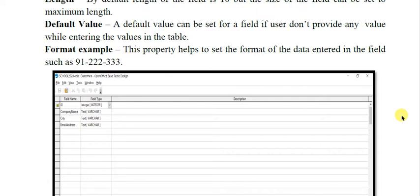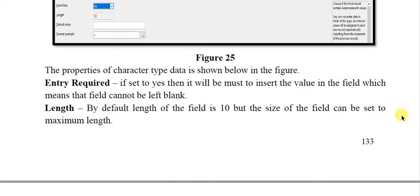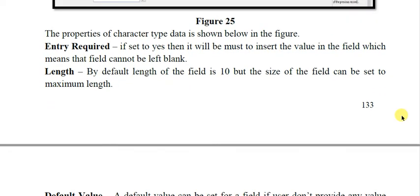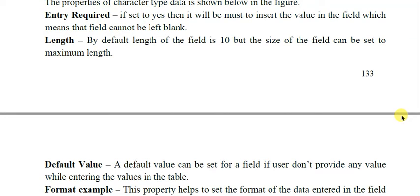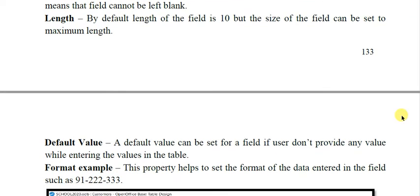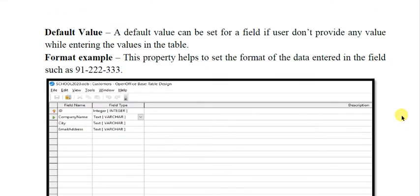Next we have 'format example' — this property helps us to set the format of the data. For example, if it is numeric data, do you want commas in between or not — this is for formatting of the data. If you have a character data type, the options are: 'entry required' — this will enable or disable the required field. If you set it to yes, it must be inserted otherwise your record will not be saved. Then we have 'length' — by default the length is 10 but you can change it. Similarly, 'default value' and the 'formatting' option.